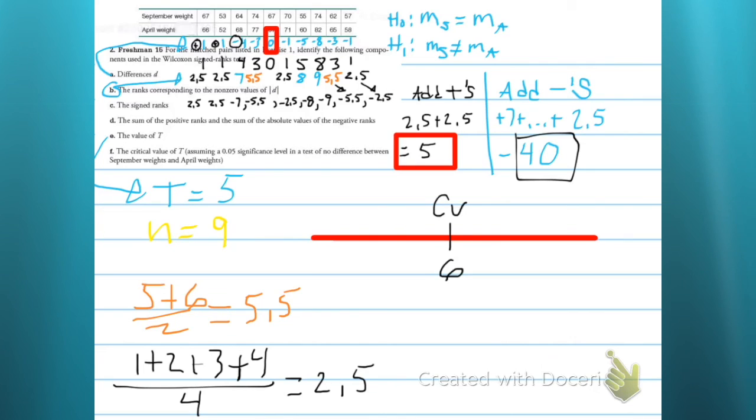Let's set up our critical values. We see our critical value is 6, and we do that from the chart with N being 9. Which side's reject and which side's fail to reject? Because we chose our T to be the smaller of the two, the left side is reject and the right side is fail to reject.